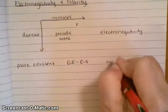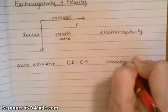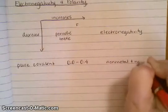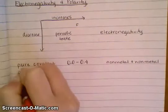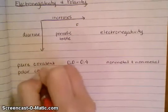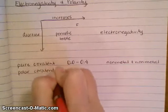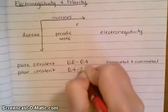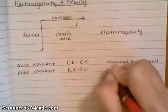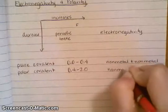There's also a polar covalent when you subtract your two numbers you should get between 0.4 and 2.0, and this is also a nonmetal and a nonmetal.